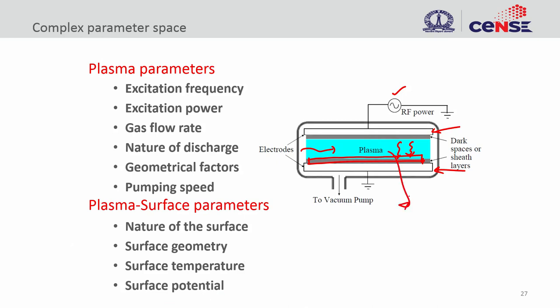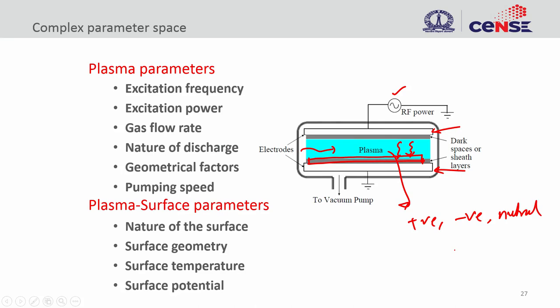The plasma will have positive, negative, and neutral species. We want to make sure we take care of all those species. The plasma process is not only used for etching — we can also use this plasma for deposition, which we will see shortly.